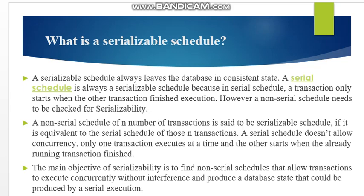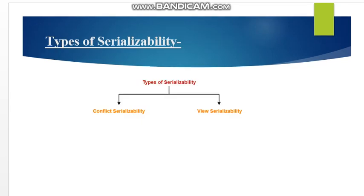A serial schedule does not allow concurrency — only one transaction executes at a time and the other transaction waits until the already running transaction is finished. The main objective of serializability is to find the non-serial schedule that allows transactions to execute concurrently without interfering and producing results in the database in a consistent state. Our aim is that the transactions should be executed simultaneously but should produce consistent results same as the serial schedule. When we consider serializability, there are two types: conflict serializability and view serializability.